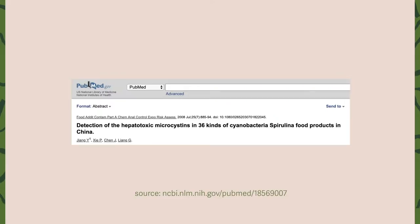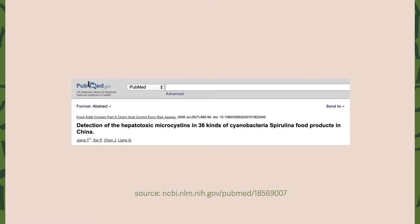Main harvesting regions include Japan with radiation from Fukushima power plant incident in 2011, China with heavy metals, lead, mercury and arsenic, and India where pollutants, pesticides and preservatives are commonly found in waters. So, growing your own spirulina will ensure that you have an eye on the source, water and nutrition used for your culture, which I think is the best option.